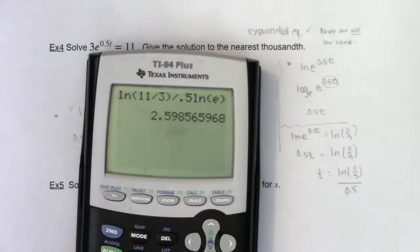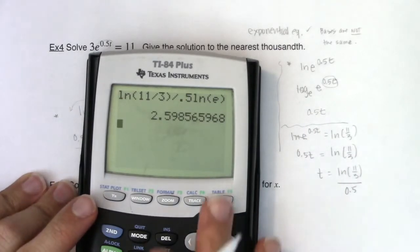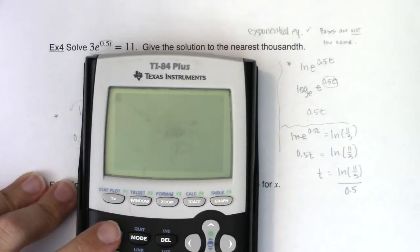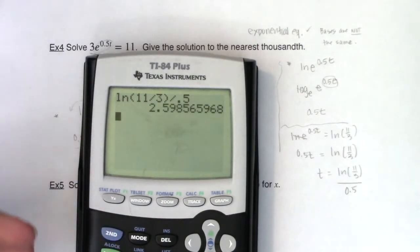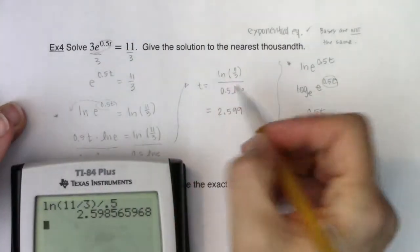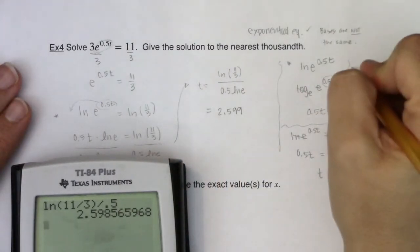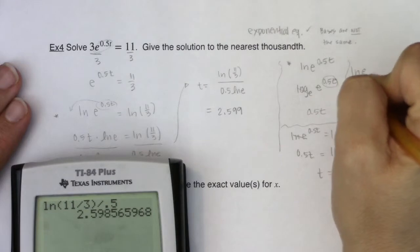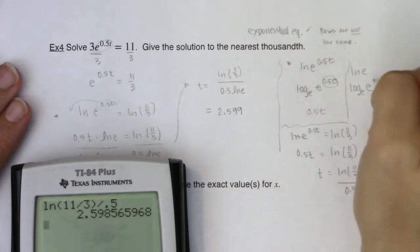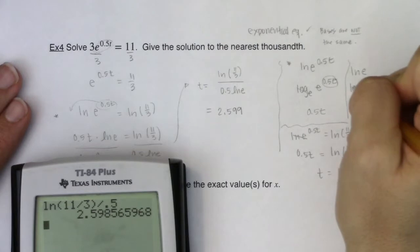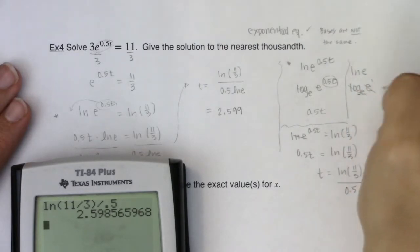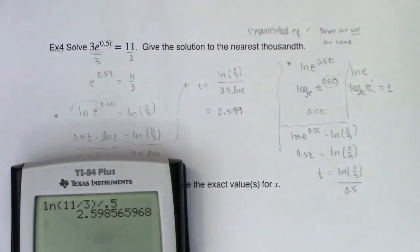And then you could have told me t was ln of 11 thirds divided by 0.5, and we would have gotten 2.599. I would have done ln of 11 thirds divided by 0.5, and there it is. And then you're thinking, okay, why? Because you have this ln e down here. Let's talk about ln e. If I did ln of e, that is like saying log base e of e. And this is basically e^1. So when the base of your logarithm and the base of your power are the same, the only thing that survives is that exponent. So ln of e is always equal to 1.